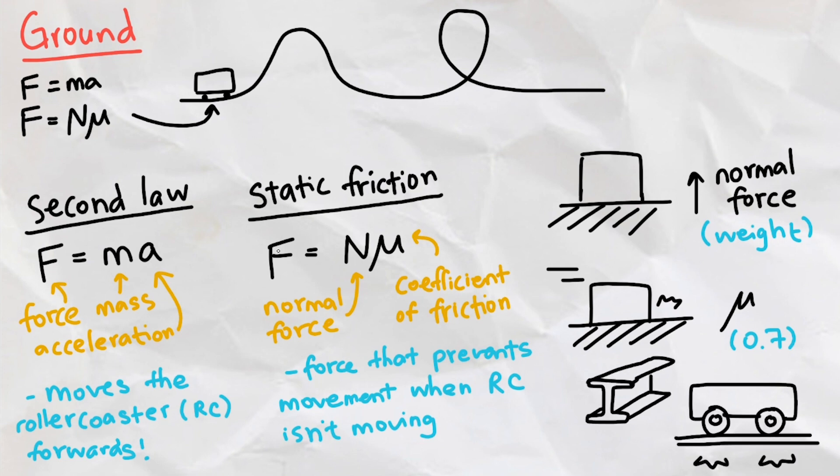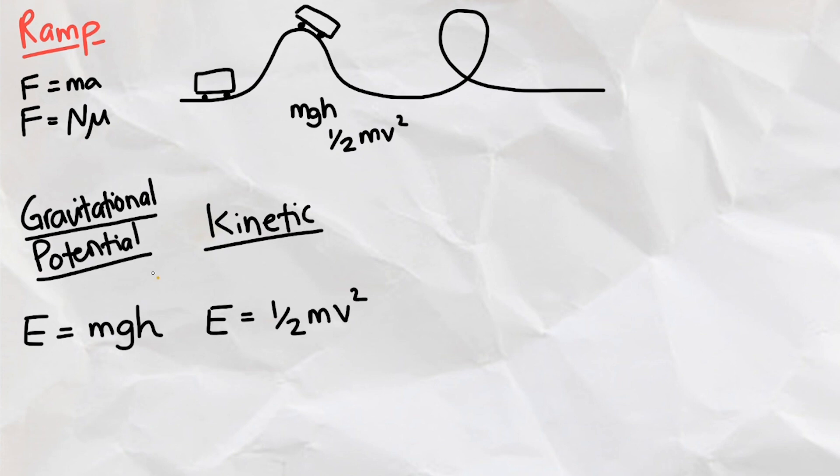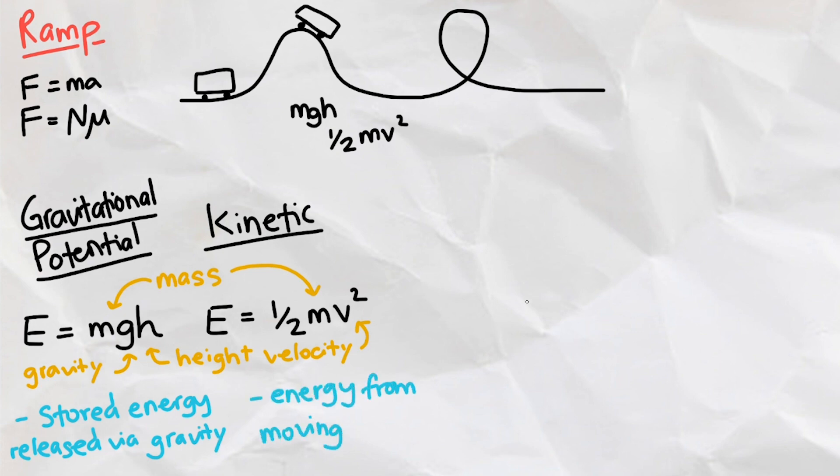So to start moving, the tracks need to generate enough force to overcome the roller coaster's static friction. Now as we start, we need to consider the gravitational potential and kinetic energy of the roller coaster, which are given as such, with m being the mass, g being gravity, h being height, and v being velocity. Gravitational potential energy is the energy an object has stored that can be released due to gravity, or in this case, falling. Kinetic energy is the energy resulting from an object moving, and these two forces will convert between each other.